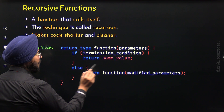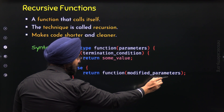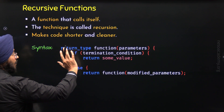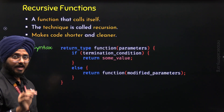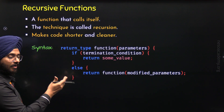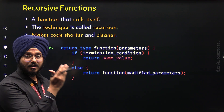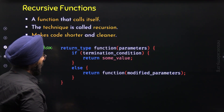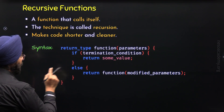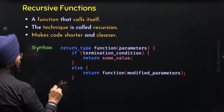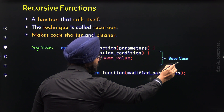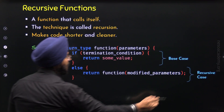If the termination condition is true, a value will be returned. Otherwise, the function calls itself with modified parameters and the final result is returned. You can observe that the function is calling itself within its own body — that is why it is called a recursive function. In recursion, we call these two parts the base case (the if block) and the recursive case (the else block).